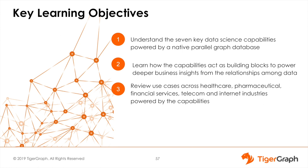This module has three key objectives. The first is to describe what each of the seven data science capabilities powered by a native parallel database are. The second is to learn how these capabilities act as a building block to deliver deeper business insights from the relationships among data. And the third is to review use cases in several industries.